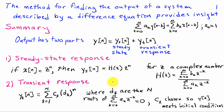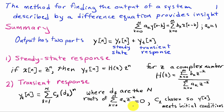The transient response tells us how the system gets from its initial state to the steady-state condition. We express y_t(n) as the sum from l equals 1 to N of c_l times d_l raised to the n-th power. The d_l are the roots of the characteristic equation, which is the sum from k equals 0 to N of a_k times z^(-k) equals 0. The constants c_l are chosen so that the total response y(n) satisfies the initial conditions.